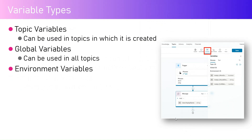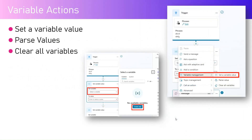There are also different variable types by scope: topic variable, global variable, and environment variable. A global variable, from a context perspective, can be used in all topics — so if you have 15 topics within your Copilot, you can use a global variable everywhere. A topic variable is limited to the specific topic in which it is created.